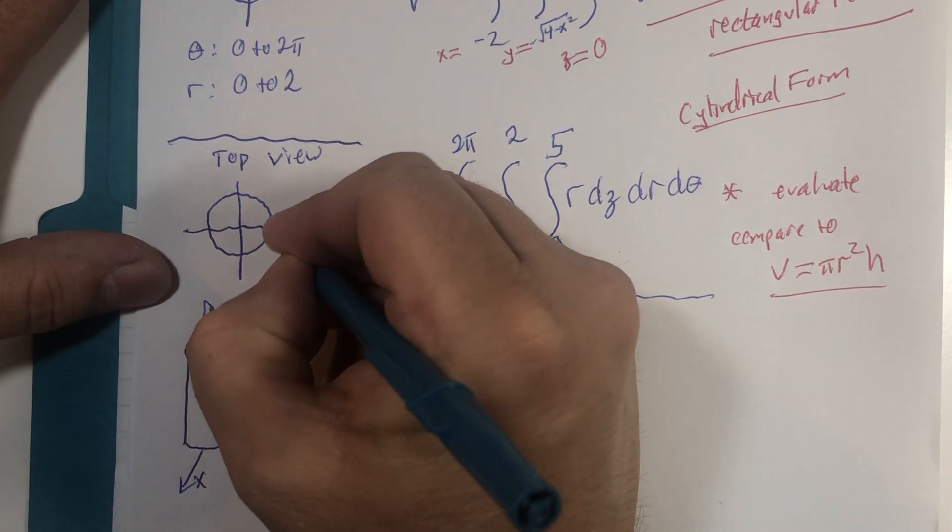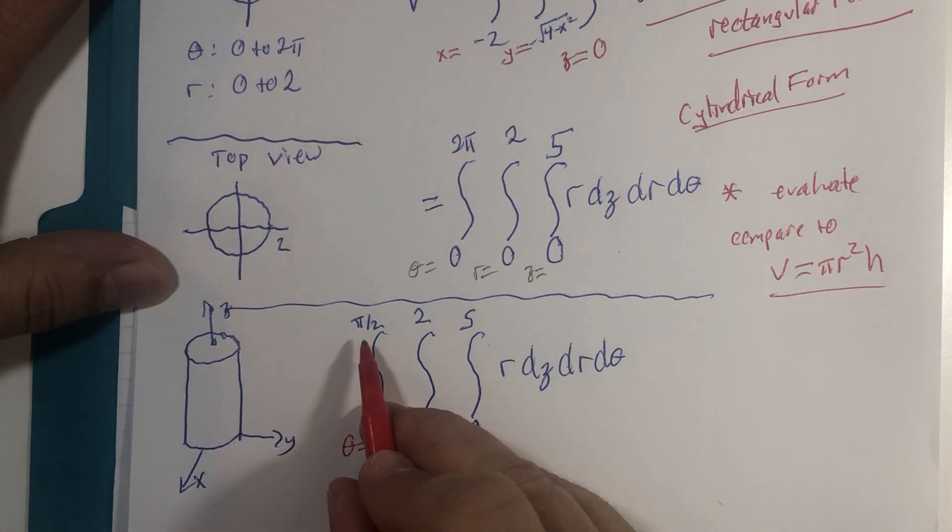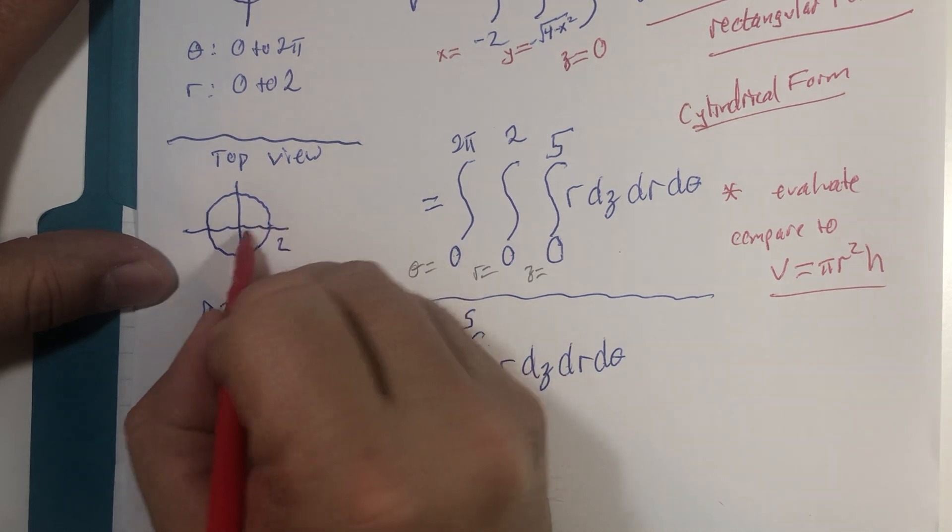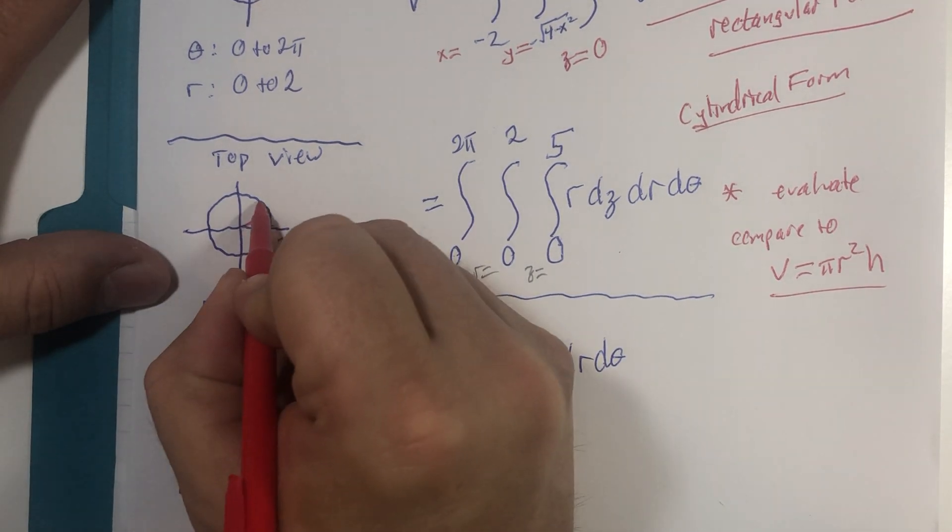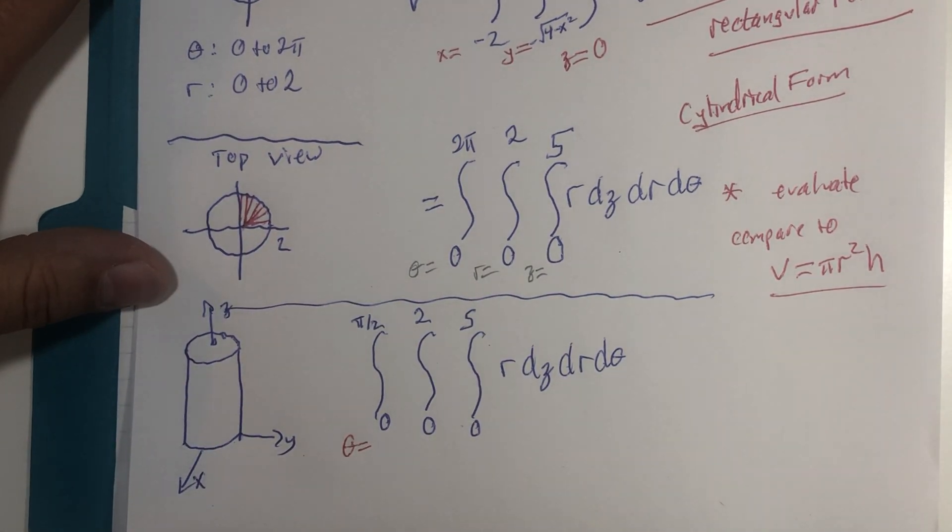The circle we had with radius two. If our boundaries for theta are only zero to pi over two, we are only looking at this part of the circle, if we're looking at from above.